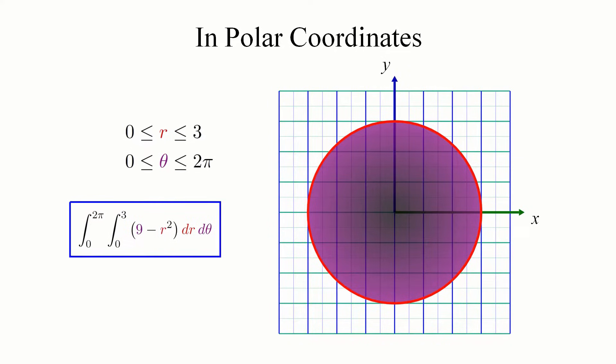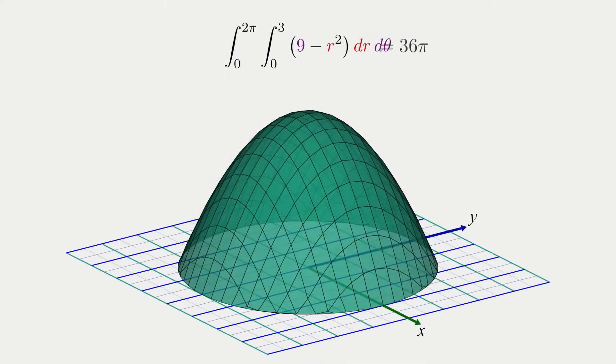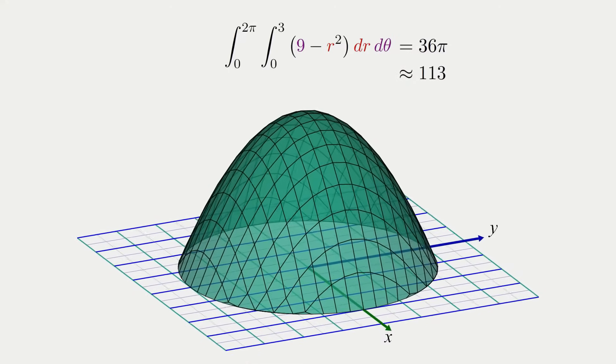And there you have it! We have converted an ugly double integral in x and y into a much simpler double integral in terms of r and theta, which only has constant bounds. If you compute this integral, you'll find that the volume is 36 pi, or about 113. Nice!